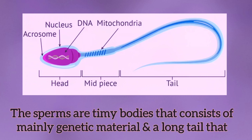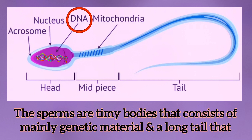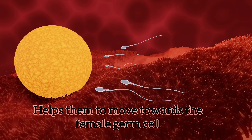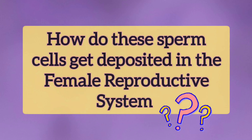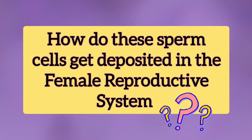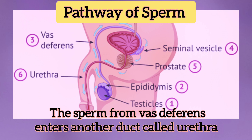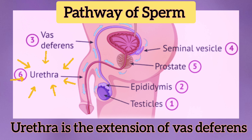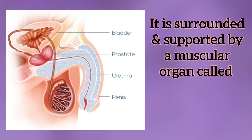Sperms are tiny bodies that consist mainly of genetic material and a long tail that helps them move towards the female germ cell. The sperm from the vas deferens then enters another duct called the urethra, which is the extension of the vas deferens.